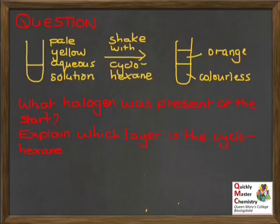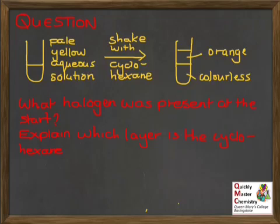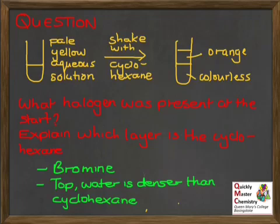Here's a question to check if you've got to grips with these ideas. Imagine you had an aqueous solution of a halogen, pale yellow in colour, and you wanted to know what halogen was present. You shook it with cyclohexane and ended up with two layers: an orange upper layer and a colourless lower layer. What halogen was present at the start, and which layer is the cyclohexane layer? The answer is bromine — bromine gives an orange colour in cyclohexane, while chlorine would only be pale yellow and iodine would be purple. The cyclohexane is the upper layer because cyclohexane is less dense than water.